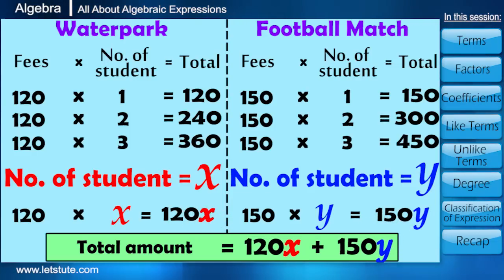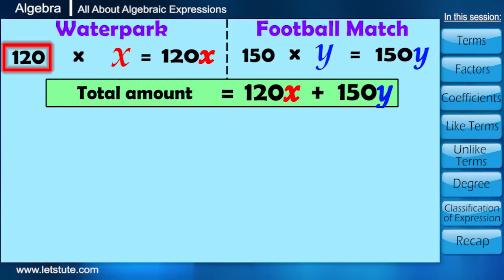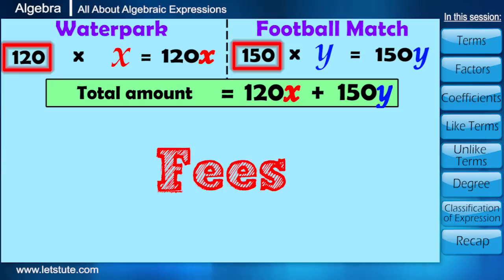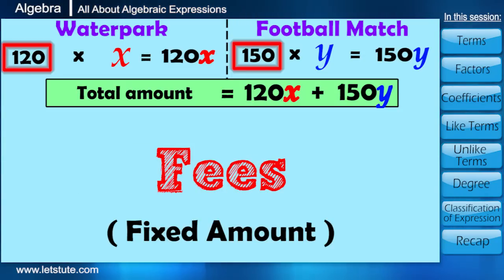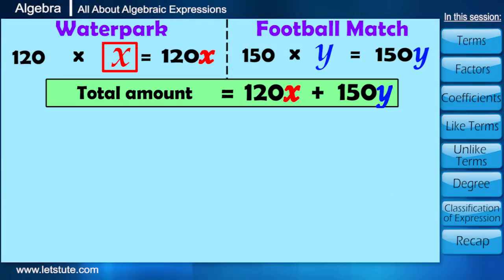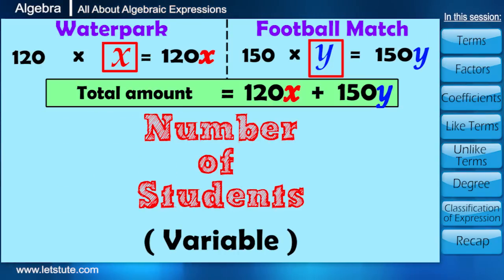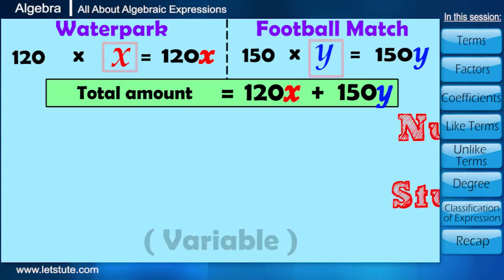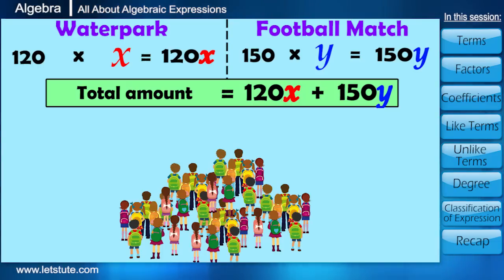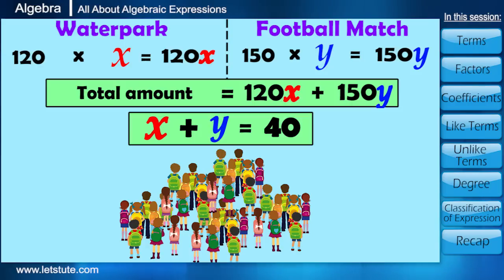If we closely analyze here, 120 and 150 are the fees, which is a fixed amount. Whereas X and Y are the number of students, which may vary. So suppose there are 40 students in total, then we can write X plus Y equals to 40.